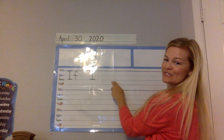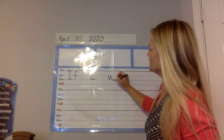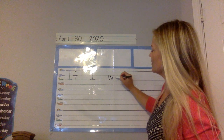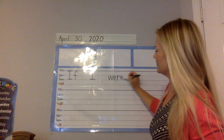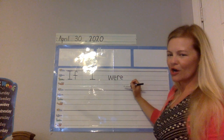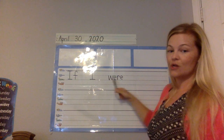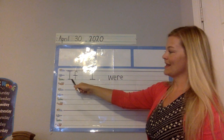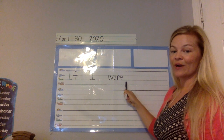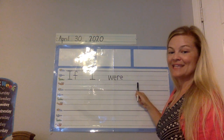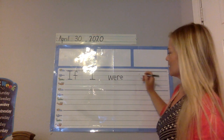Now we do a space and start a new word: W, E, R, E. That's a hard word to sound out, but that's the word "were." So far we have: If I were.